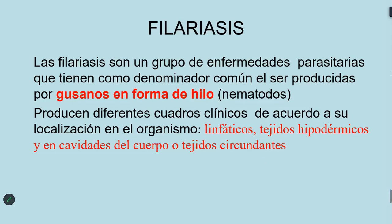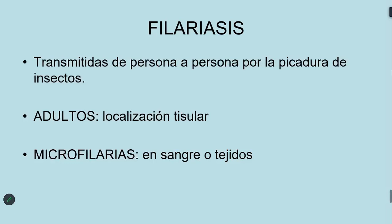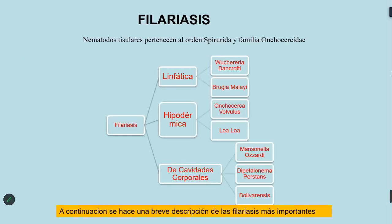Según donde se localicen, se van a clasificar estas filariasis. En general son transmitidas de una persona a otra por la picadura de insectos. Estas filarias tienen una forma adulta cuya localización es tisular en los tejidos, y las formas larvarias reciben el nombre de microfilarias en sangre o tejidos. Hay adultos en los tejidos y las microfilarias pueden estar en la sangre, en los vasos linfáticos o en los tejidos.